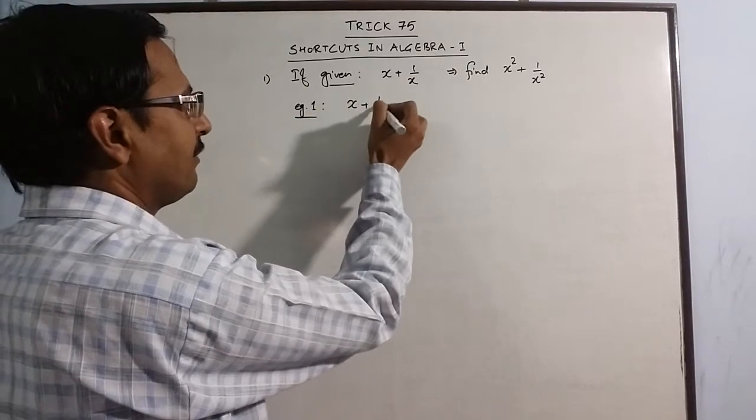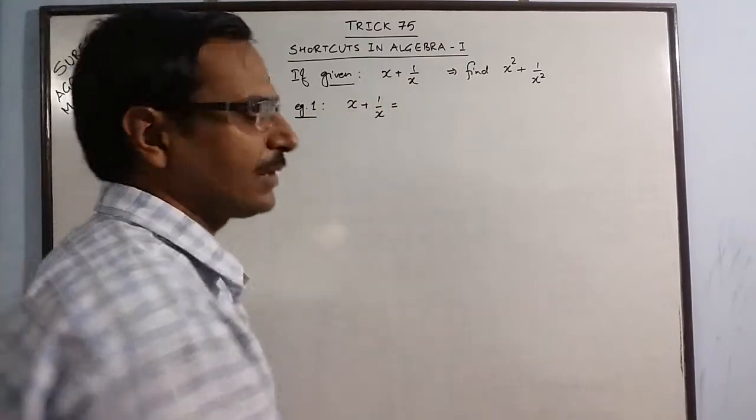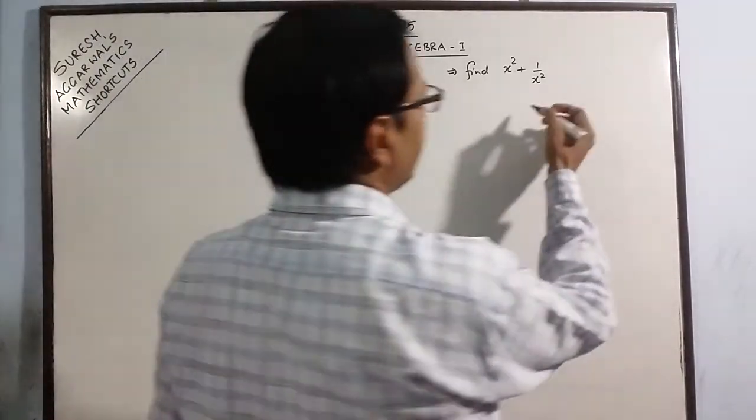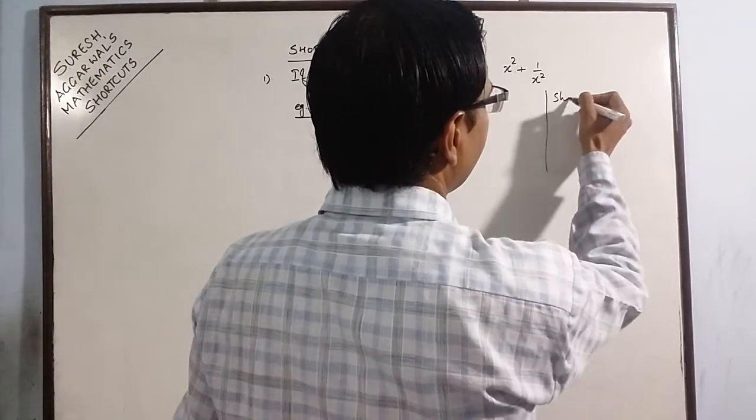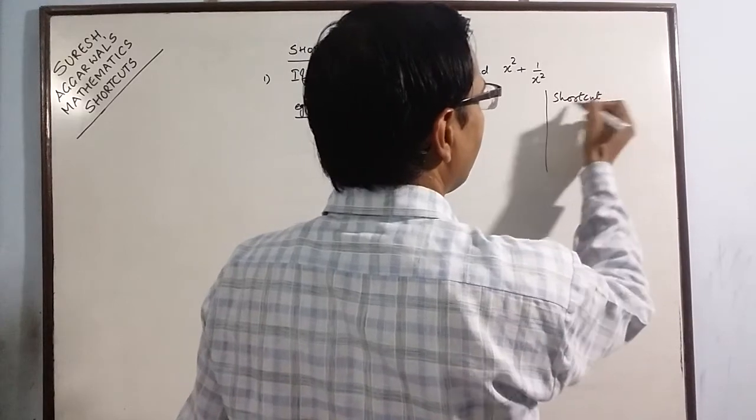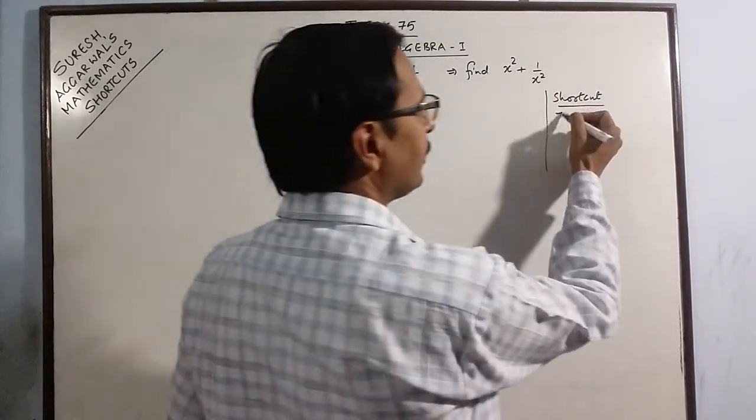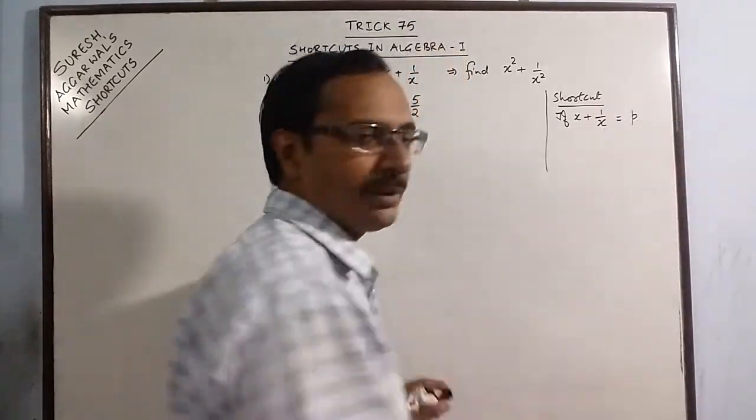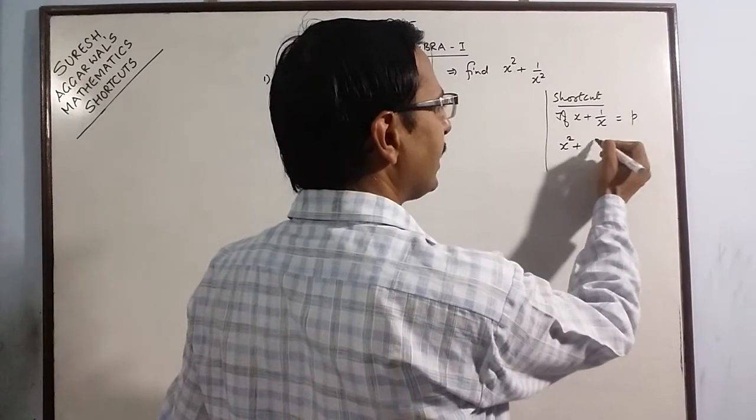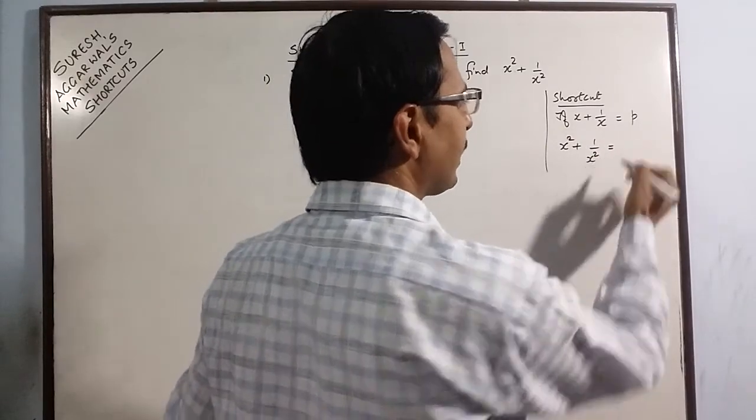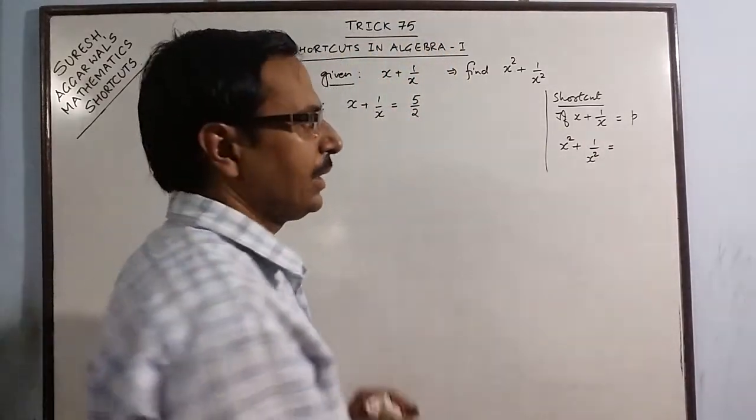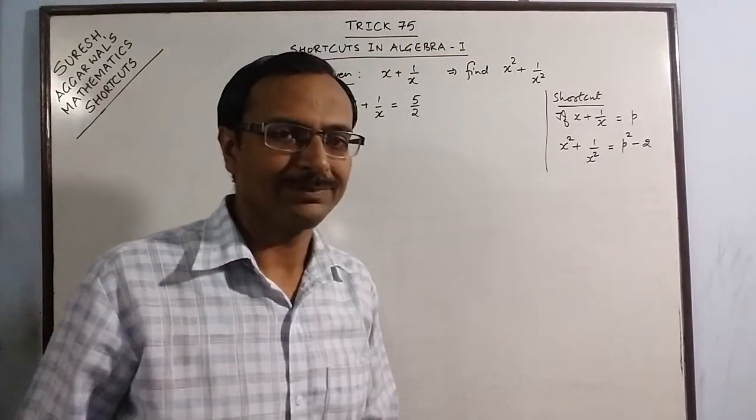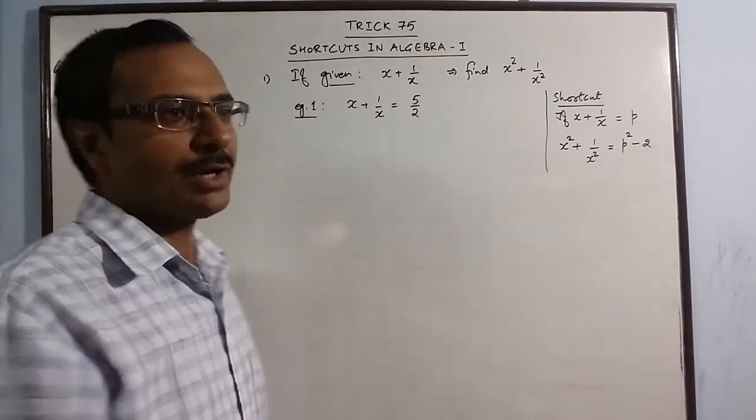Say, we are given the value of x plus 1 by x as 5 upon 2. The shortcut method for this type of problem is if you have the value of x plus 1 by x as p, then straightforward you can write the value of x squared plus 1 by x squared as the square of p and just subtract 2 from the square which will give you the required result.